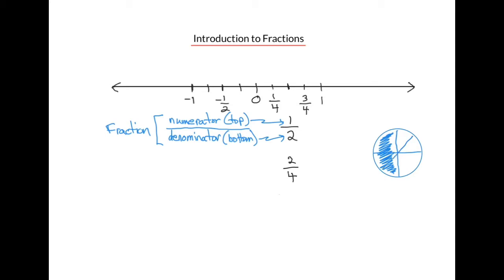Now, what if we divided our circle again, this time into eight equal parts? Let's also divide our number line between 0 and 1 into eight equal parts. So our mark representing 1 half on the number line is also equal to four steps out of eight steps on the way from 0 to 1, or the fraction 4 eighths.